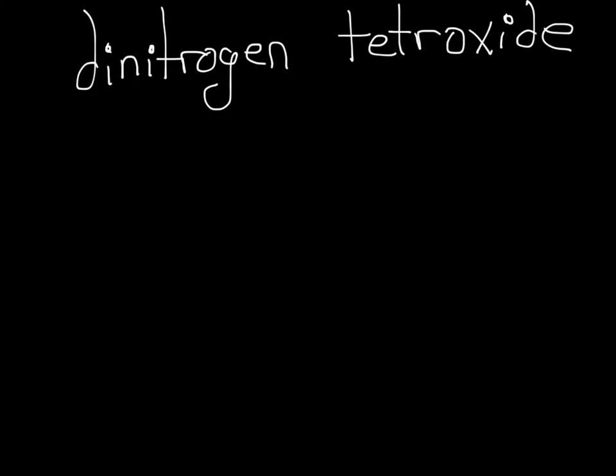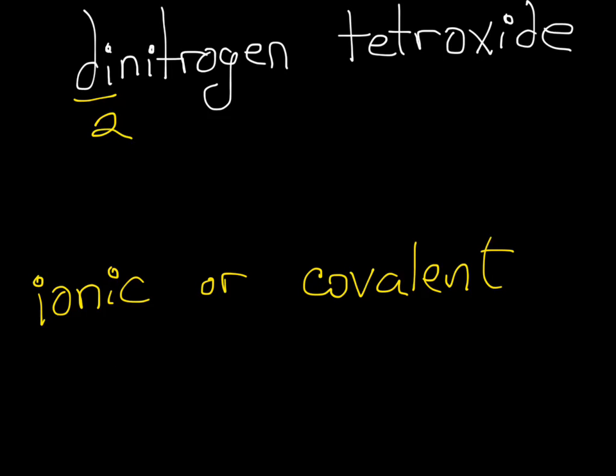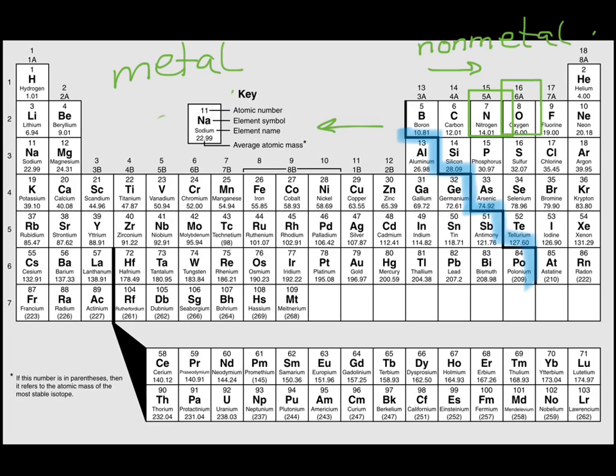Let's try one more. What if we have dinitrogen tetroxide? Again, we need to ask our question: ionic or covalent? So we see we have di, which if you look at the back of your periodic table, you'll find prefixes. Di means two, tetra means four. So we have di, which means two nitrogens, and tetra, which means four oxides. Let's look here, we have nitrogen and oxide. Let's try to locate those on the periodic table. We have nitrogen, and we have oxygen. They're both nonmetals, so they're not ionic.